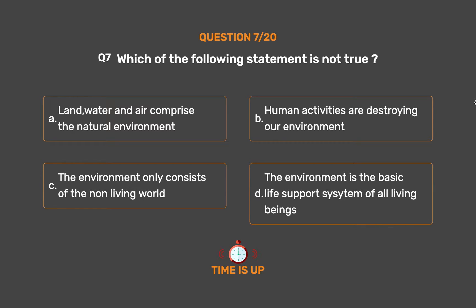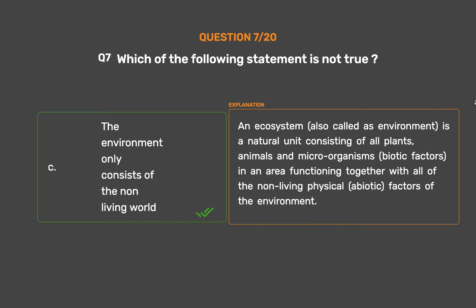The correct answer is Option C: The environment only consists of the non-living world. An ecosystem, also called the environment, is a natural unit consisting of all plants, animals, and microorganisms (biotic factors) in an area functioning together with all of the non-living physical factors of the environment.